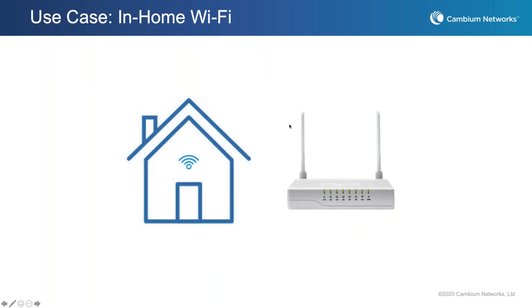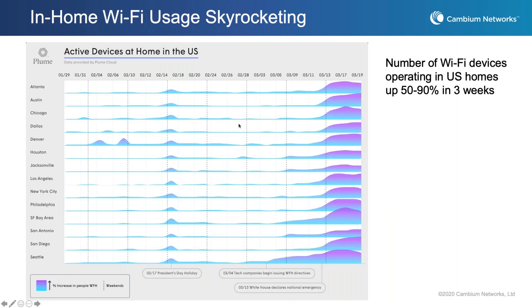A couple of points related to in-home Wi-Fi. Cambium does have products that sell into this space, mostly sold through service providers. One of the things we're seeing with respect to in-home usage in general is the dramatic increase. A chart from a U.S. provider shows a dramatic spike in usage that has happened over just the last 11 or 12 days, based on new quarantine orders and the White House declaring a national emergency. You can see Seattle trailing earlier at the bottom row, because Washington was one of the most heavily hit by coronavirus shutdowns — the number of active devices in the home just went through the roof.